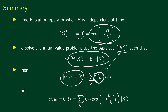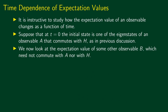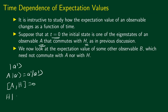Now let us see how expectation values change in time. Suppose that at time t equal to 0 the initial state is one of the eigenstates of an observable A that commutes with the Hamiltonian. We take the initial state as ket A-prime, where ket A-prime is an eigenket of operator A satisfying its eigenvalue equation. We also say that A is an operator that commutes with the Hamiltonian. This means that ket A-prime is also an eigenket of the Hamiltonian.